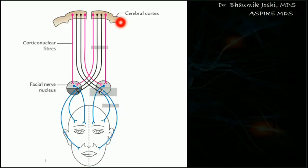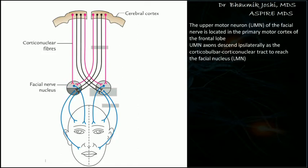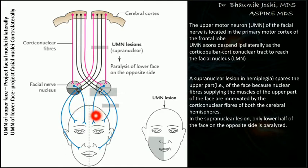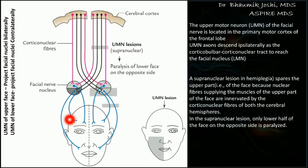The upper motor neuron is located in the cerebral cortex and sends corticonuclear fibers to the lower nucleus. One important thing to understand is that the upper motor neuron fibers for the upper face project to the facial nuclei bilaterally. As shown by the pink and black colored fibers, the right side of the cortex sends fibers to both the right and left nuclei. This means the upper face receives supply from both upper motor neurons — right and left. The lower face, however, receives supply only from the contralateral upper motor neuron.